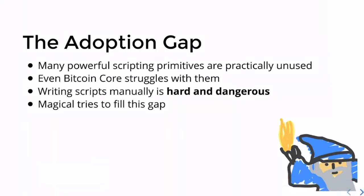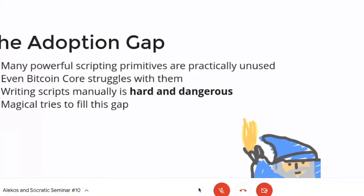Writing script manually is very hard - only very expert developers can do that. So when you're building a product and trying to integrate this, it would probably be dangerous to start writing complex scripts. The result is that nobody uses them. The main goal of Magical Bitcoin is to provide something generalized, and as a side effect it also fills this gap - because when you try to make something generalized you have to support these primitives. So it's not just yet another wallet library - it's also pushing the boundaries of what wallet libraries have done, specifically with timelocks.